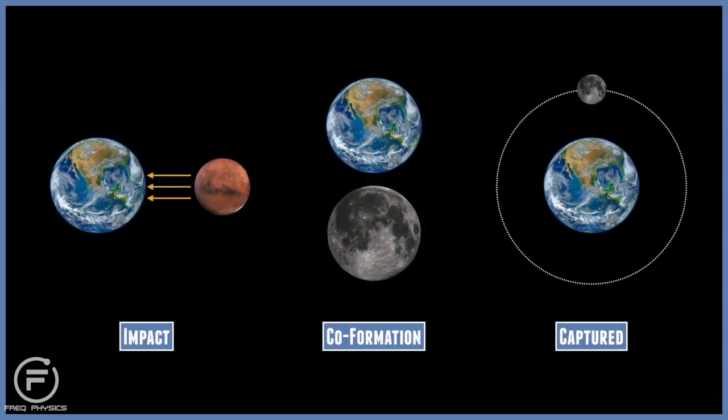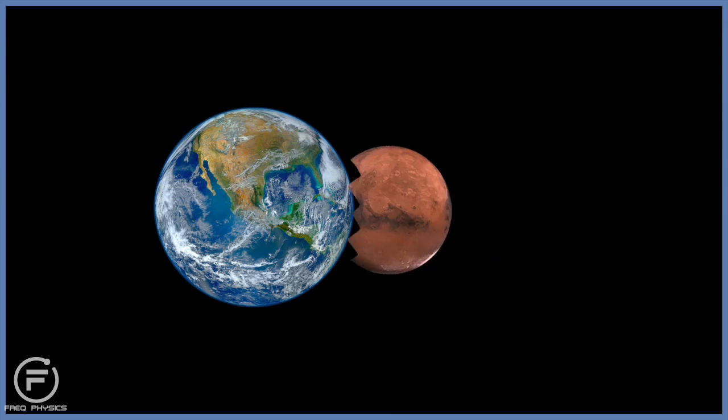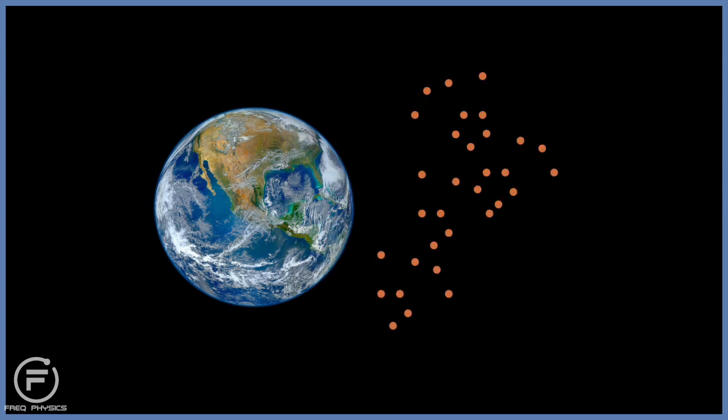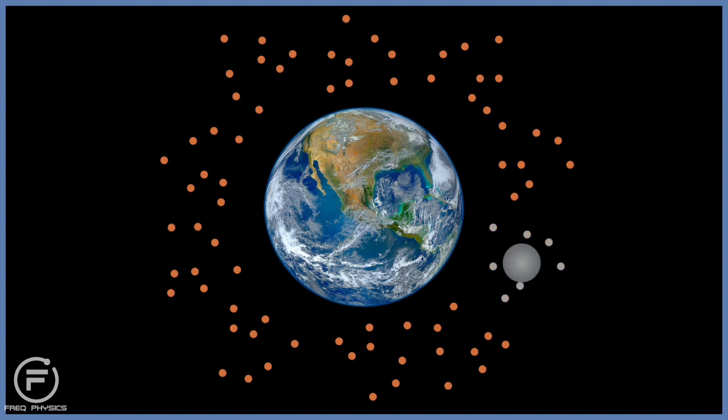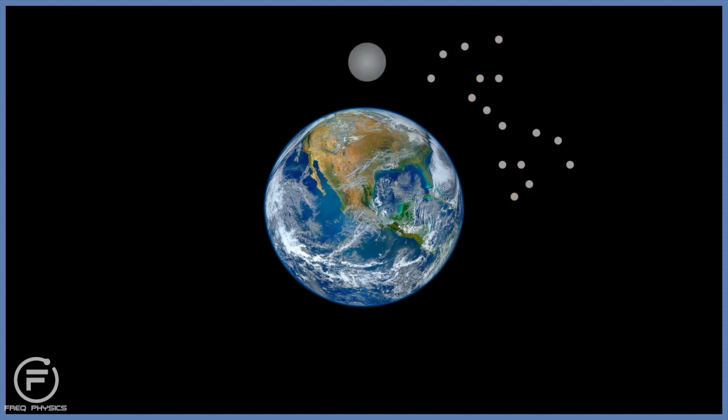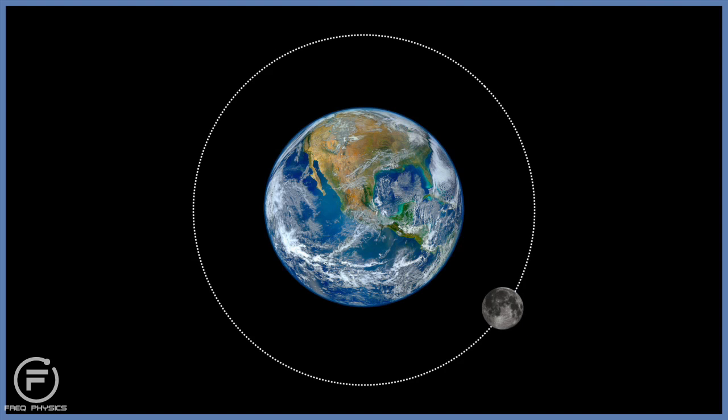The co-formation theory and the capture theory both explain some elements of the existence of the moon, but they have so many unanswered questions. So the leading theory is the giant impact theory. This seems to cover as much as possible and answers most of the questions. This makes it the leading theory in the formation of the moon, and is the best scientific evidence to show that our moon was probably once another planet that collided with earth and coalesced into what we know now as our closest neighbor, the moon.